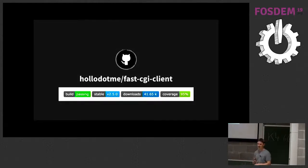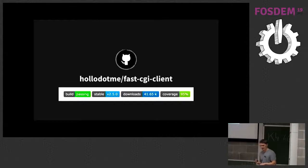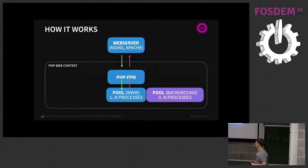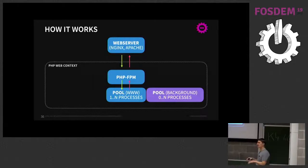The library still contains original code from Pierrick Charron (who remains in the authors list), but about 90% of the code is new. It requires PHP 7.1 and works up to 7.3. Version 2.5.0 was recently released with better error handling. The library leverages PHP-FPM pools: you can define a background pool that is isolated and not exposed publicly, configured to spawn processes on demand.